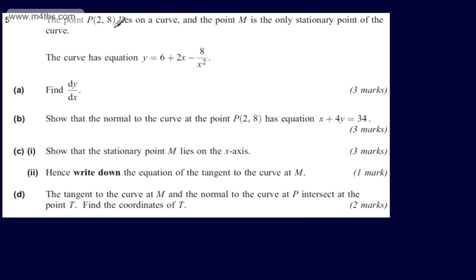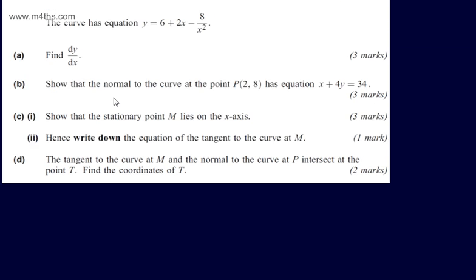This is question number 5. We're told that point P lies on a curve and the point M is the only stationary point of the curve. The curve has equation y = 6 + 2x − 8 over x squared. In part A, for three marks, we're asked to find dy by dx. The first thing I'm going to do is rewrite y as 6 + 2x − 8x to the power of minus 2.